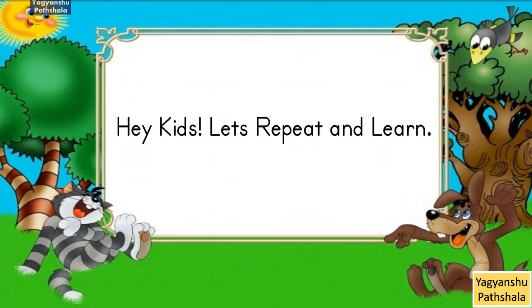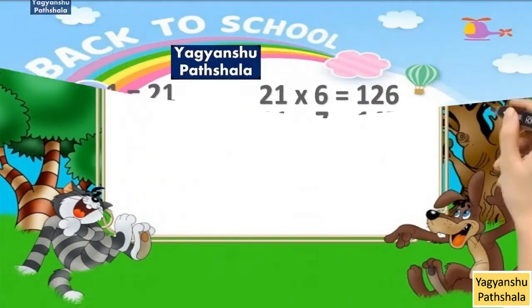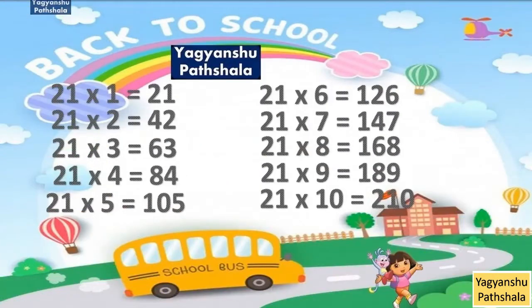Hey kids, let's repeat and learn. 21 1 Jaa 21. 21 2 Jaa 42. 21 3 Jaa 63. 21 4 Jaa 84. 21 5 Jaa 105. 21 6 Jaa 126. 21 7 Jaa 147. 21 8 Jaa 168. 21 9 Jaa 189. 21 10 Jaa 210.